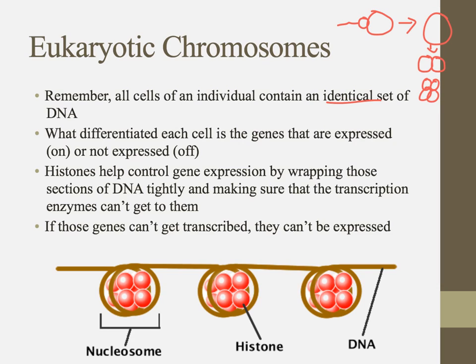So why do your skin cells look different from your tongue cells? That's because not all of the genes contained in that DNA are expressed. We need some genes to be turned on and others to be turned off. If you're a skin cell, you want all the genes that help you be a skin cell turned on, and all the genes that tell something how to be a liver cell turned off. Histones are actually really helpful in that also, because they can wrap those sections of DNA tightly so that enzymes can't get in to transcribe and translate them, and if they can't get transcribed and translated, that gene can't get expressed.